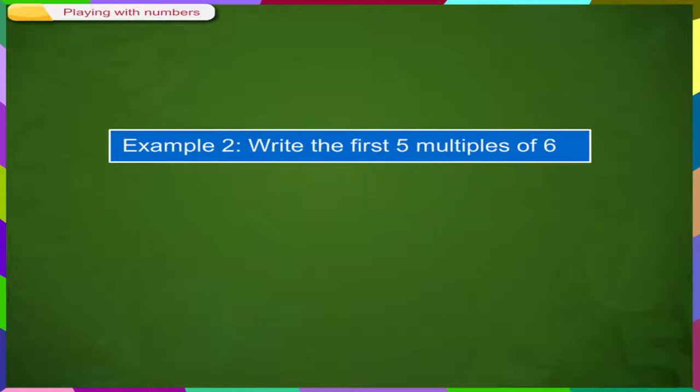Example 2. Write the first 5 multiples of 6. Solution. 6, 12, 18, 24, 30 are the first 5 multiples of 6.